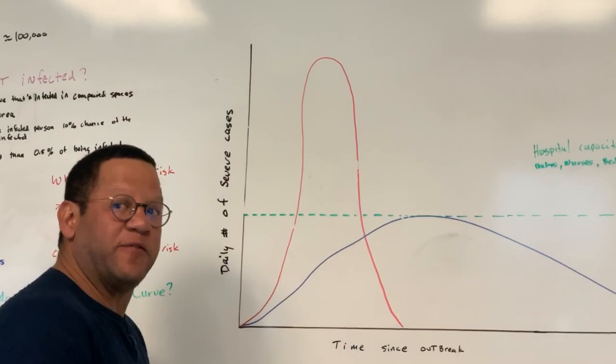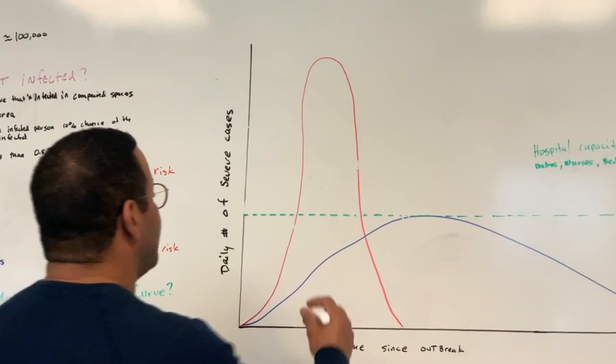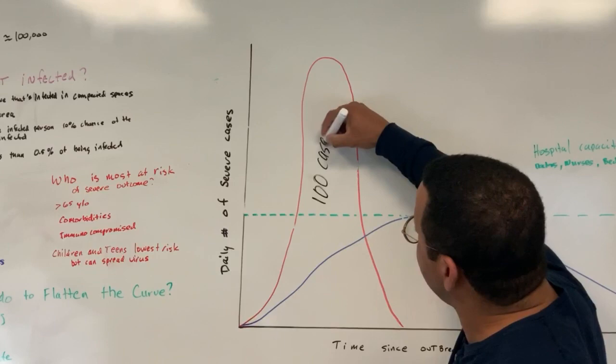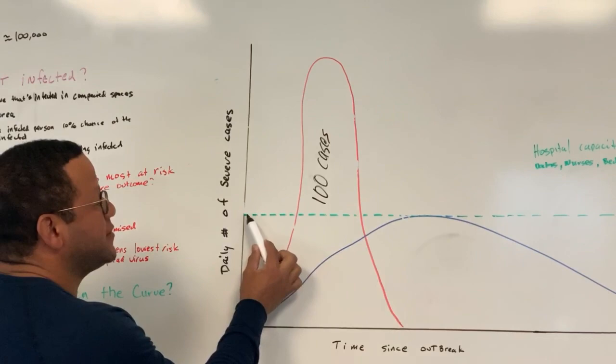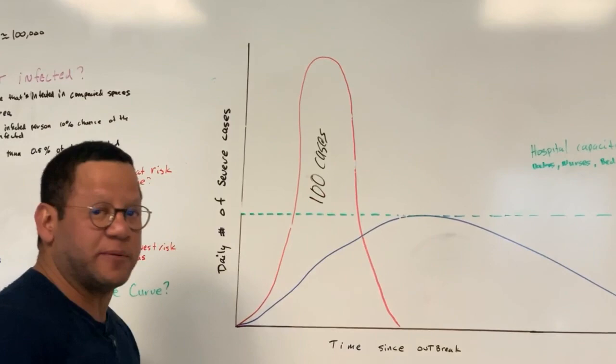So this first graph here is if we did nothing. So in our town, in Ardmore, if we did nothing, that means that within a week period of time, a week or two period of time, we'll have 100 cases. Those 100 cases will, in that small amount of time, will surpass the hospital ability, which is this line right here, the hospital ability to respond. So it would overwhelm our hospital system.